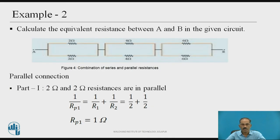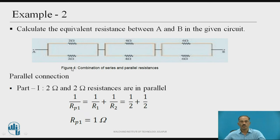Similarly, we shall see one more example. Calculate the equivalent resistance between A and B in the given circuit. From point A to B, there are 6 resistors connected: 2 Ω and 2 Ω are in parallel; 4 Ω and 4 Ω are in parallel; and 6 Ω and 6 Ω are in parallel. Once you simplify these parallel resistances, all three equivalent resistors come in series.